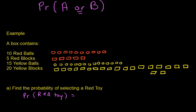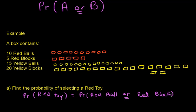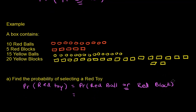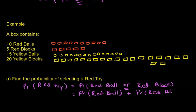So if we get a red toy, that means we either got a red ball or a red block. There's that word 'or.' So this is the probability of getting a red ball or a red block. If you get a red ball or a red block, you got a red toy. So now let's find the probability. If we add up the probability of getting a red ball to the probability of getting a red block, that will be the probability of getting a red ball or a red block. So if either situation happens, we can just add up these probabilities.